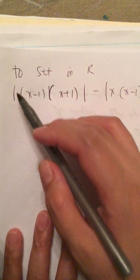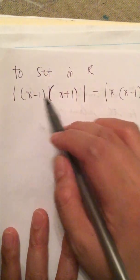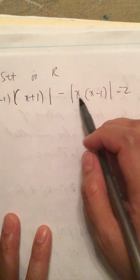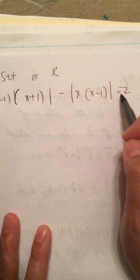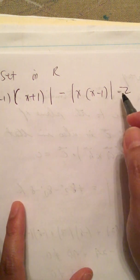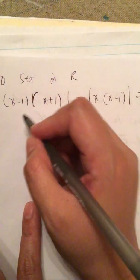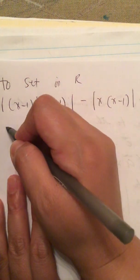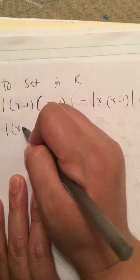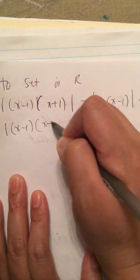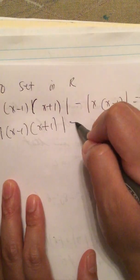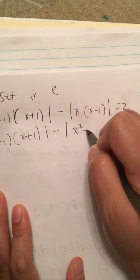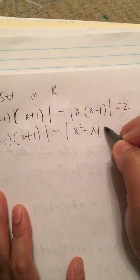To solve in R, we have the absolute value of x minus 1 times x plus 1, minus the absolute value of x times x minus 1, is equal to 2. So we have the absolute value of x squared minus 1, minus the absolute value of x squared minus x.